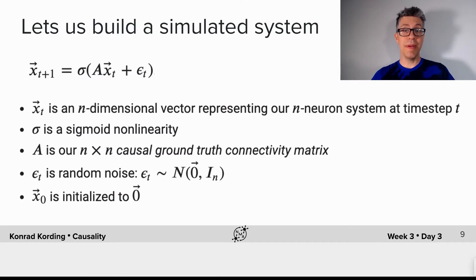Now let's implement such a system. Let's implement the simplest system that we could think of. We have the activity vector at the next point of time is A times the previous time point activity plus noise with some potential non-linearity applied to it.